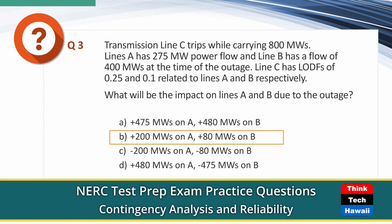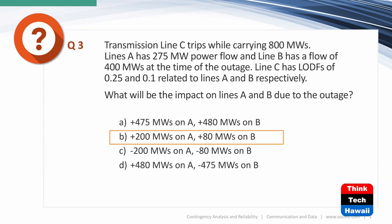In this case, you need to eliminate some answers. Answer A is meant to trick you if you misread the question — if the question asked for the resulting final flow after the outage, you'd look elsewhere. But here the question asks for the impact, not the final flow. Read the question carefully and make sure you understand what's being asked.